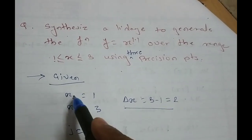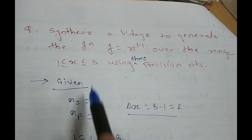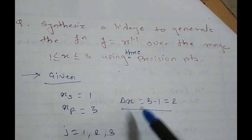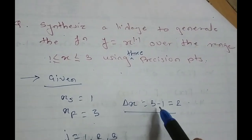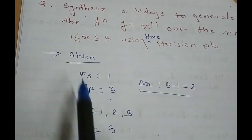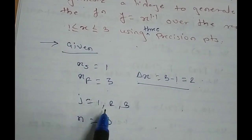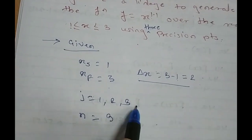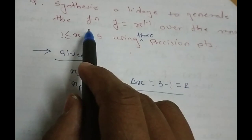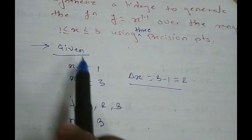So, xs which is starting position is 1. xf in position is 3. So, delta x range is 3 minus 1 equals 2. Then j again within the range. j is equal to precision position. So, 1, 2, 3.